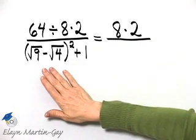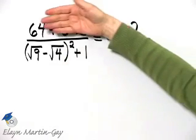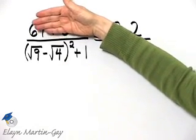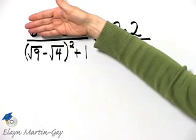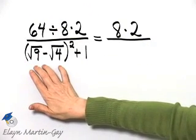Now let's independently work below the fraction bar. Think of order of operations below the fraction bar. Notice we have a set of parentheses below the fraction bar, so we'll work within this set of parentheses first.